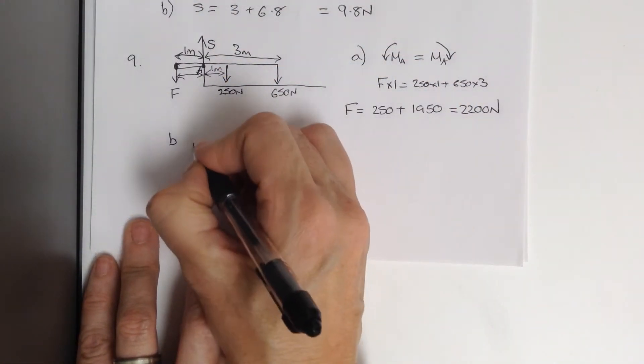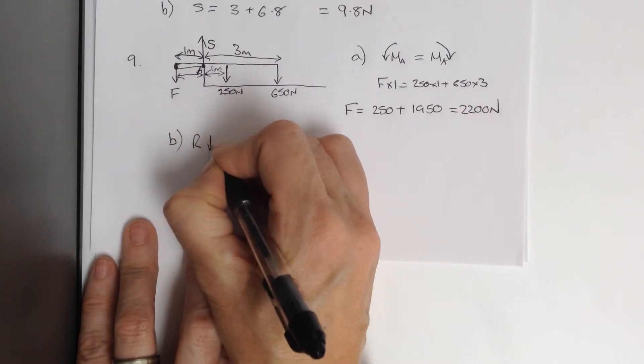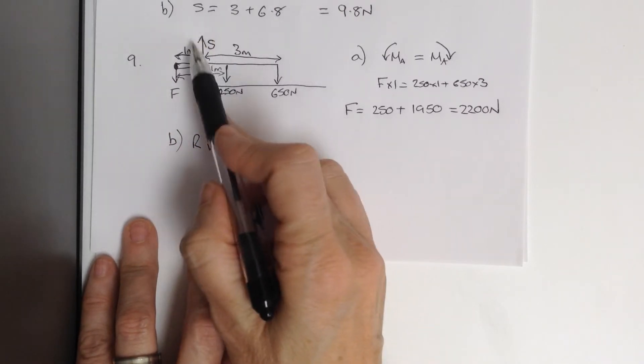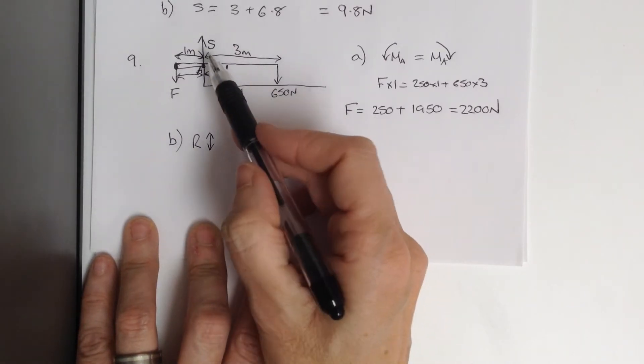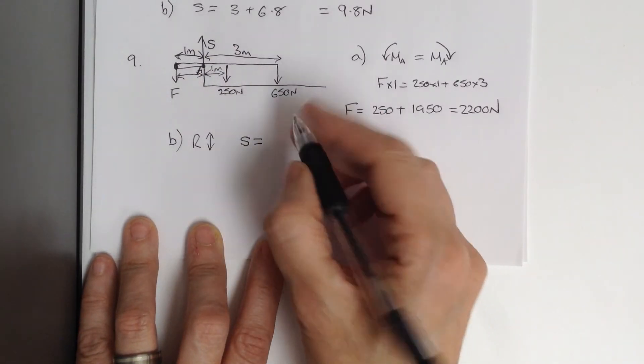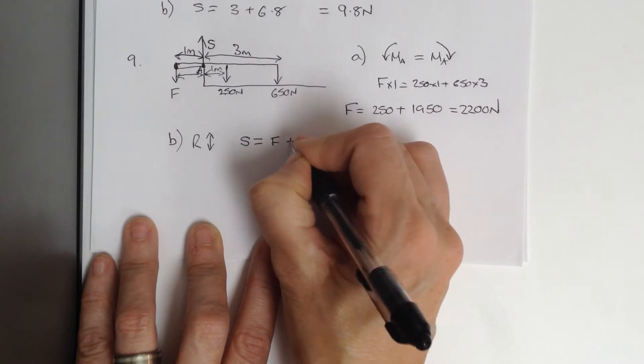Resolving vertically, S is the upward force, so S would be balanced by the downward forces, so that would be F plus 250.